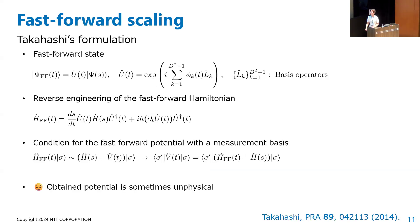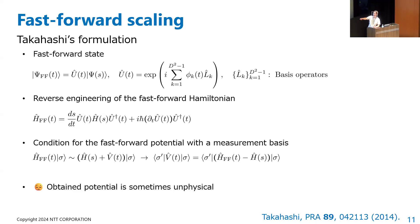After that, Takahashi formulated this fast-forward scaling for general quantum systems. In Takahashi's formulation, the fast-forward Hamiltonian is constructed such that the action of the fast-forward Hamiltonian in a rotated measurement basis is equivalent to the action of the Hamiltonian plus an additional driving term in its measurement basis. Takahashi finds that to determine this driving term, we have to solve a certain condition, but sometimes this condition diverges and is difficult to satisfy.